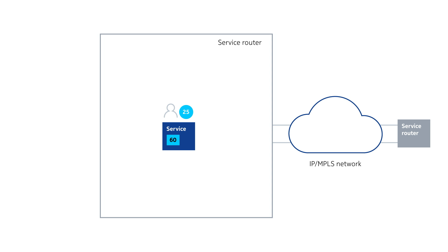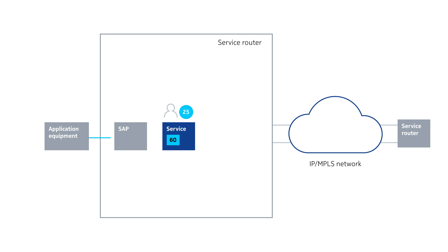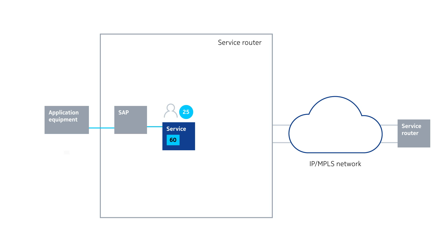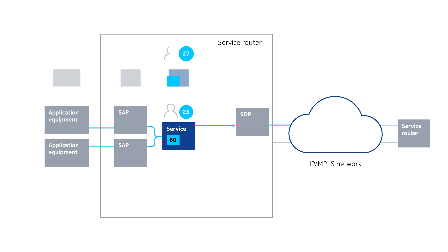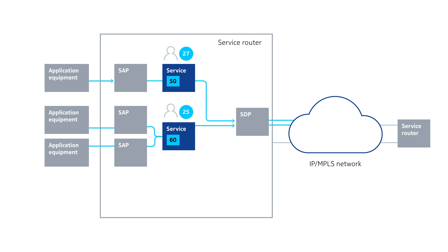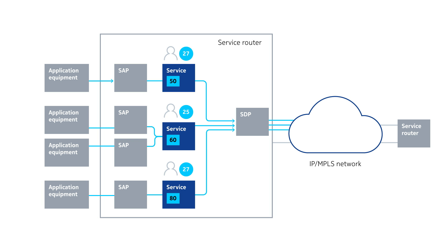Another component is the service type, which defines the type of service. The third component is the service access point, or SAP — this is the point at which a service begins or ends. Depending on the service configuration there can be more than one SAP, as in a multipoint service such as VPLS or VPRN. Finally, the fourth component is the service destination point, or SDP, which logically directs traffic from one router to another through a unidirectional service tunnel.